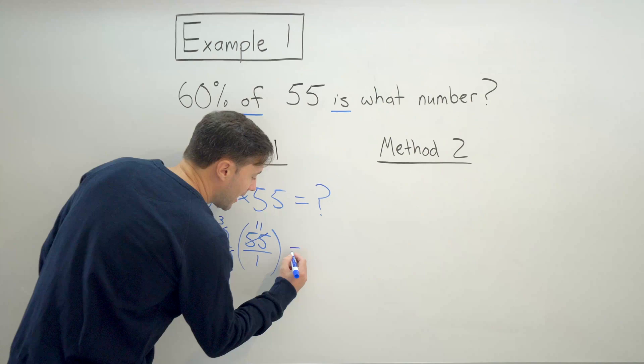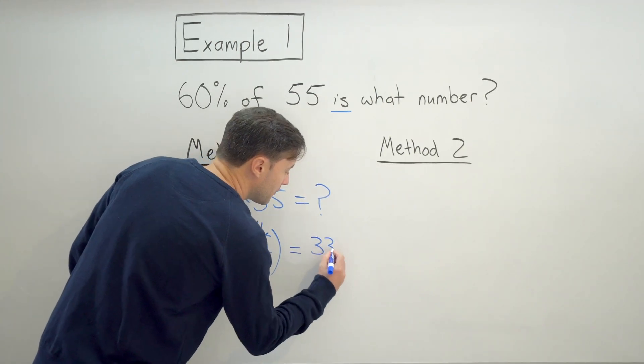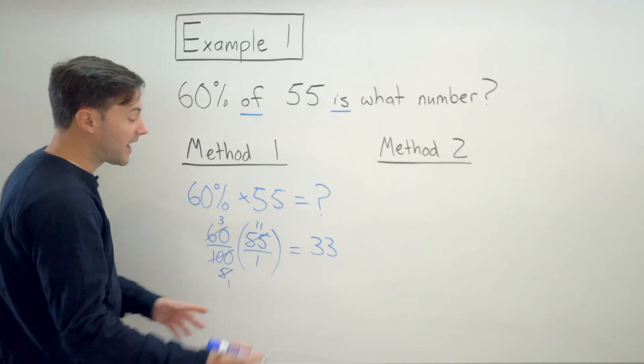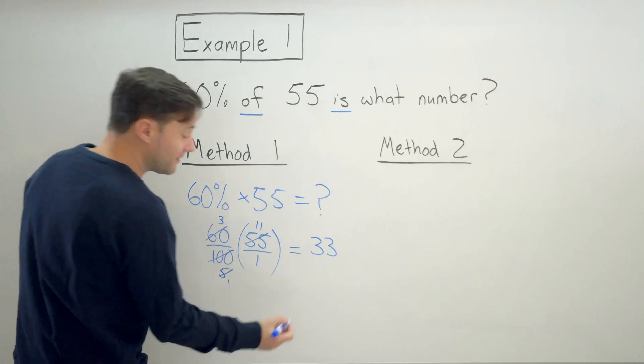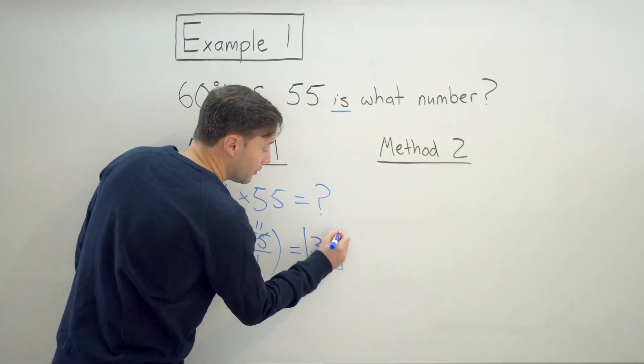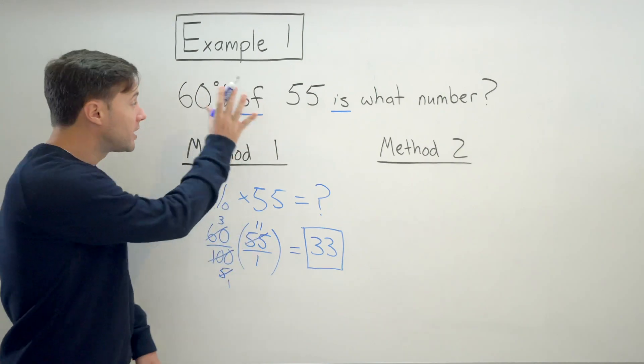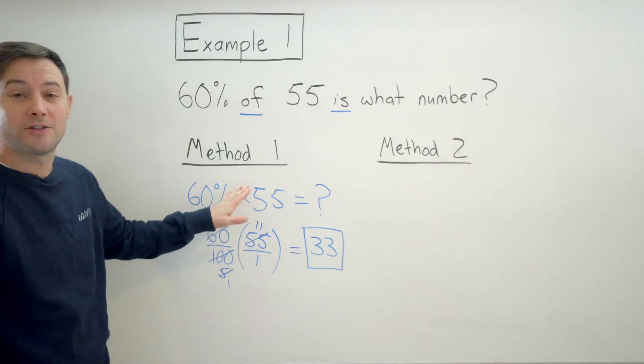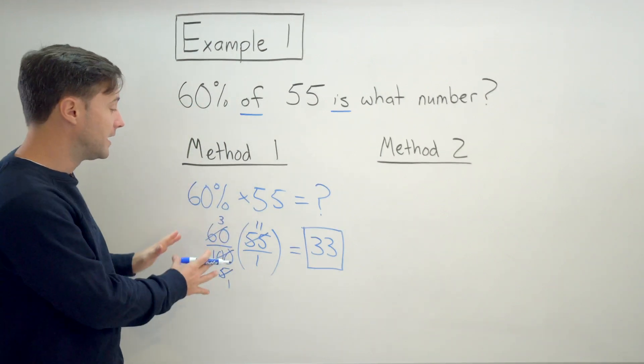So now all I have is 3 times 11, which is 33. 1 times 1 in the denominator, I don't really need it. So 60% of 55 is 33. That's the first method. Okay, just looking at the keywords and really just using multiplication and changing the percent into a fraction. That's essentially all we did.